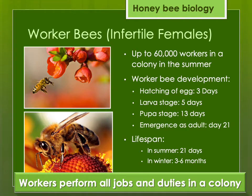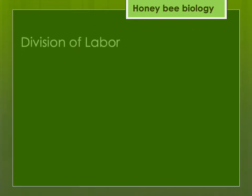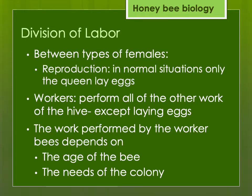If the colony needs more nectar or honey, the workers will send out foragers to gather that. If the hive needs more water, they'll send out specific foragers to go gather water, and so on. There's division of labor within the hive. The only job of the queen is to lay eggs. She also produces queen pheromone that the colony needs so they can stick together and function as a normal, healthy colony. The workers perform all other work: feeding the baby bees or brood, making honeycomb, making honey, gathering pollen and nectar — pretty much everything except laying eggs.